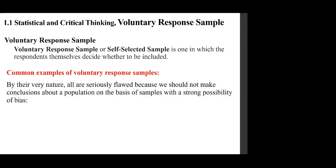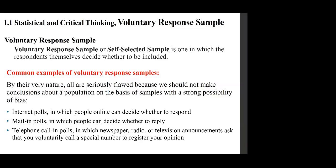By their nature, voluntary response samples are flawed. Common examples include: internet polls in which people online can decide whether to respond; mail-in polls in which people can decide whether to reply; and telephone call-in polls in which newspaper, radio, or television announcements ask that you voluntarily call a special number to register your opinion.